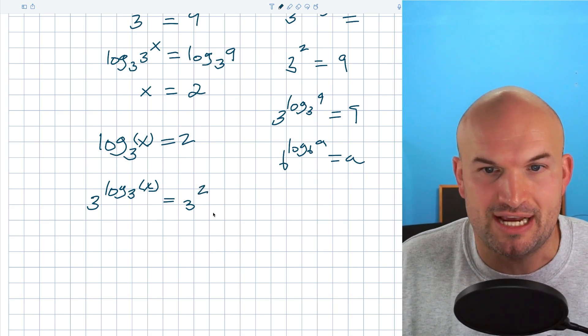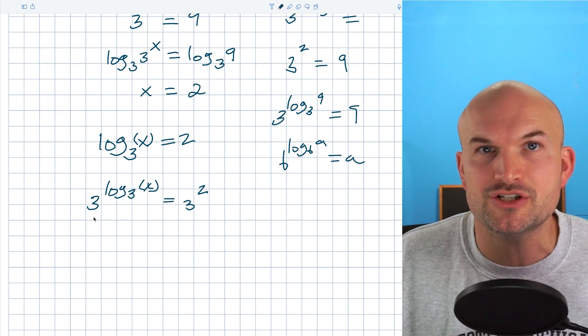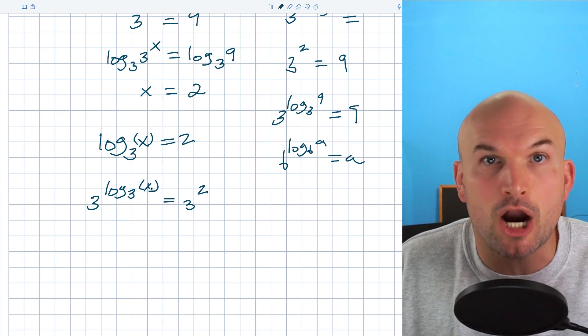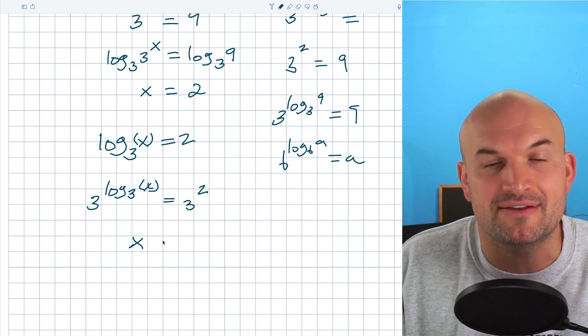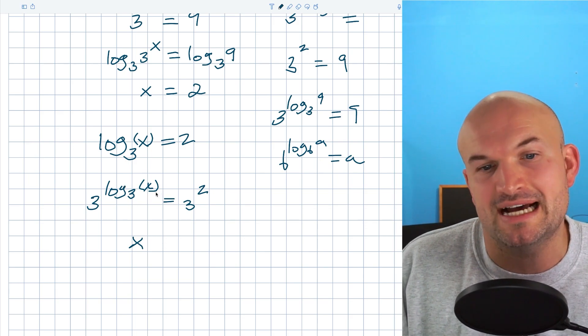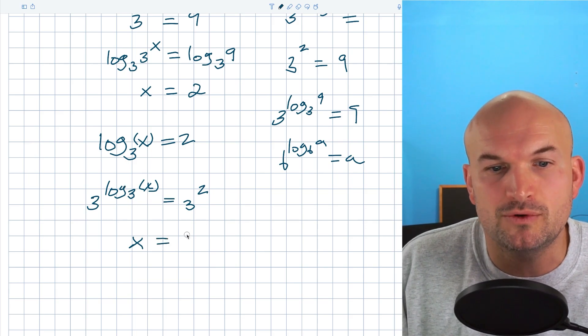And the reason why we want to exponentiate is because now we have this relationship here, which is now going to allow our argument just to be represented on the left-hand side. That's going to simplify down to x. And again, that's going to simplify equal to 9.